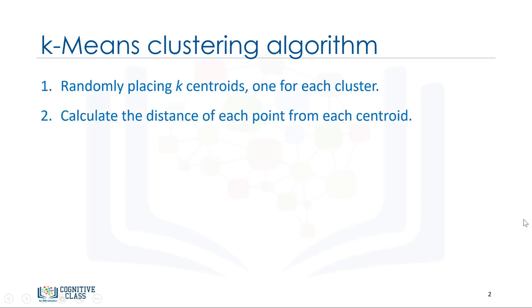The next step is to calculate the distance of each data point or object from the centroids. Euclidean distance is used to measure the distance from the object to the centroid. Please note, however, that you can also use different types of distance measurements, not just Euclidean distance. Euclidean distance is used because it's the most popular.